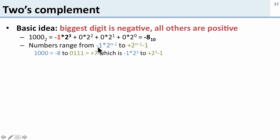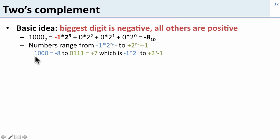For this case, numbers are going to range from minus 1 times 2 to the n minus 1, to plus 2 to the n minus 1 minus 1. So the minimum number, the smallest number, is going to be 1 0 0 0 which is minus 8, and the largest number is going to be when we don't have the negative bit and have all the positive bits set: 0 1 1 1, which is 7. So for a 4-bit 2's complement number the smallest is minus 8 and the largest is plus 7.